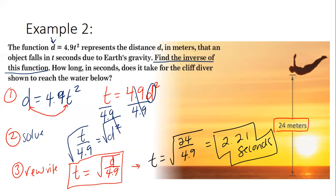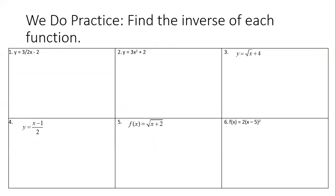Did you have to find the inverse to answer this question? No — you could have plugged in 24 from the beginning. But finding the inverse is useful because if the distance were 56, 36, or any other value, you'd have a formula to just plug in the distance directly without redoing the whole process every time. The key takeaway: the inverse of squaring is taking the square root.